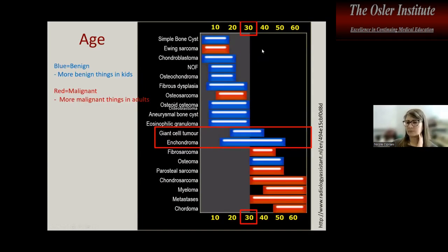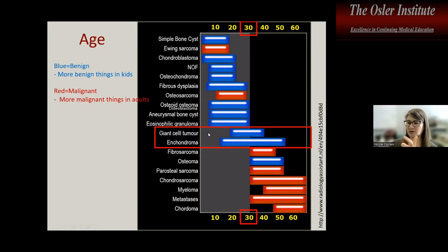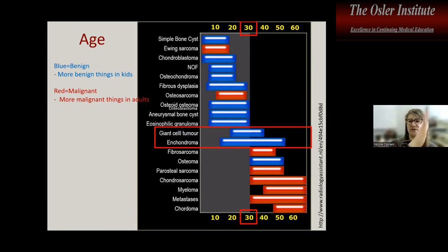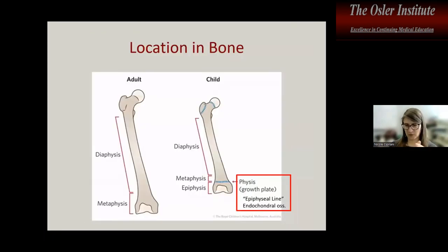Thinking about age: in kids we mostly deal with benign tumors; in adults mostly malignant. Around age 30 there is overlap — giant cell tumors and enchondromas can span childhood and adulthood. Where is the tumor in the bone? Is it in the epiphysis, metaphysis (the transition between growth plate and diaphysis), or diaphysis (the shaft)?